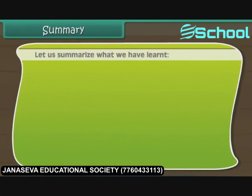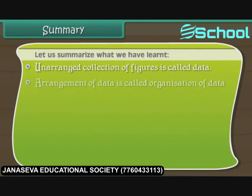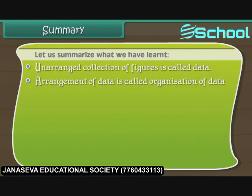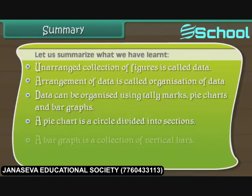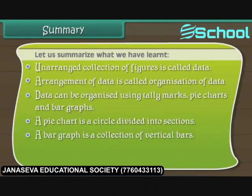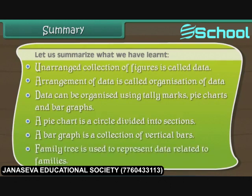Let us summarize what we have learned. Unarranged collection of figures is called data. Arrangement of data is called organization of data. Data can be organized using tally marks, pie charts and bar graphs. A pie chart is a circle divided into sections. A bar graph is a collection of vertical bars. Family tree is used to represent data related to families.